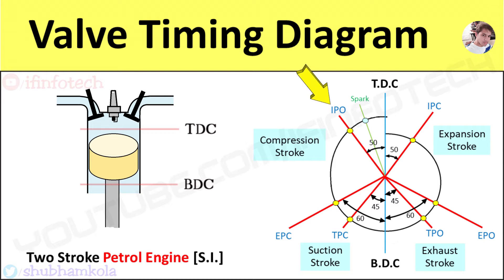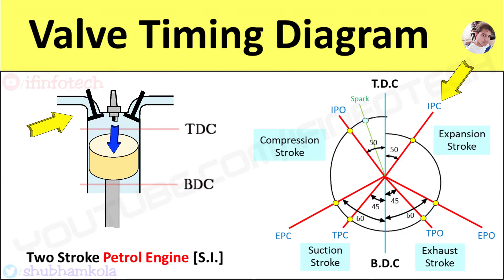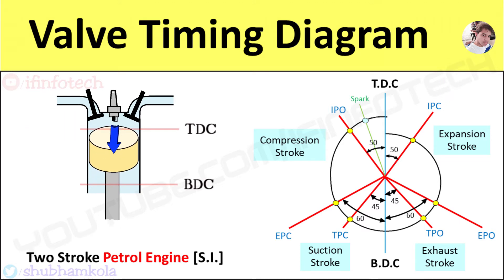In this cycle, before the expansion stroke, that is at an angle of 50 degrees before TDC position of the piston, the inlet valve opens and air-fuel mixture enters from the inlet port. The inlet port closes at an angle of 50 degrees after TDC position of the piston. When the piston reaches TDC, combustion of the air-fuel mixture takes place due to the spark.